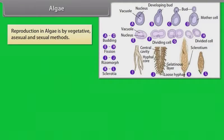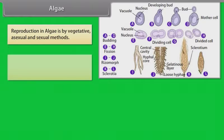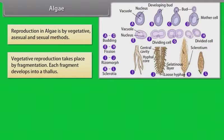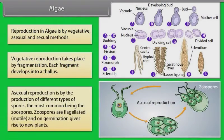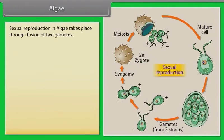Reproduction in algae is by vegetative, asexual and sexual methods. Vegetative reproduction takes place by fragmentation. Each fragment develops into a thallus. Asexual reproduction is by the production of different types of spores. The most common being the zoospores. Zoospores are flagellated, motile and on germination gives rise to new plants.